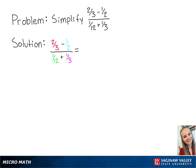For this problem, we're going to simplify 2 thirds minus 1 half divided by 1 twelfth plus 1 third.